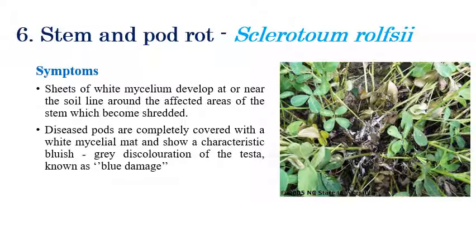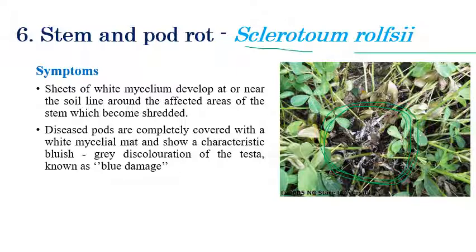Stem rot or Pod rot is caused by Sclerotium rolfsii. White color mycelial growth can be clearly seen on the stem and root region. Sometimes white color mycelial growth can also be seen on pods. This mycelial growth slowly extends from the roots to the upper stem regions and occasionally to the leaves in later stages. A dense mycelial mat deposited on the root region is the characteristic symptom.